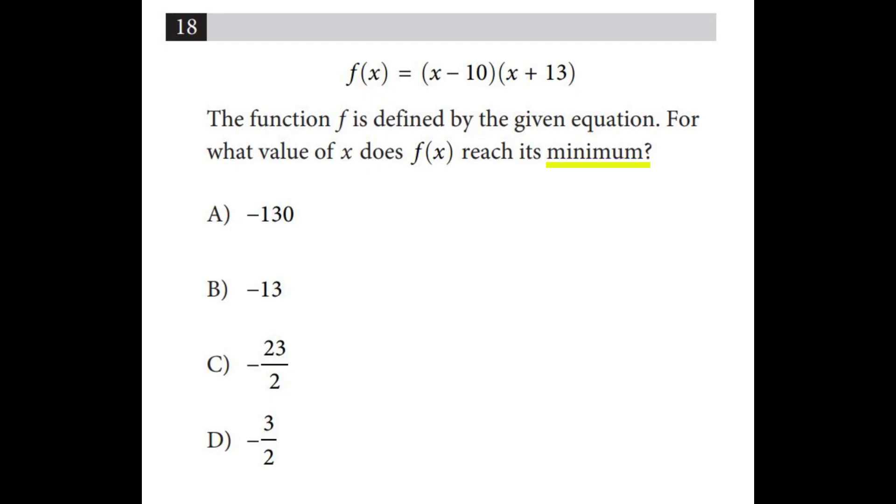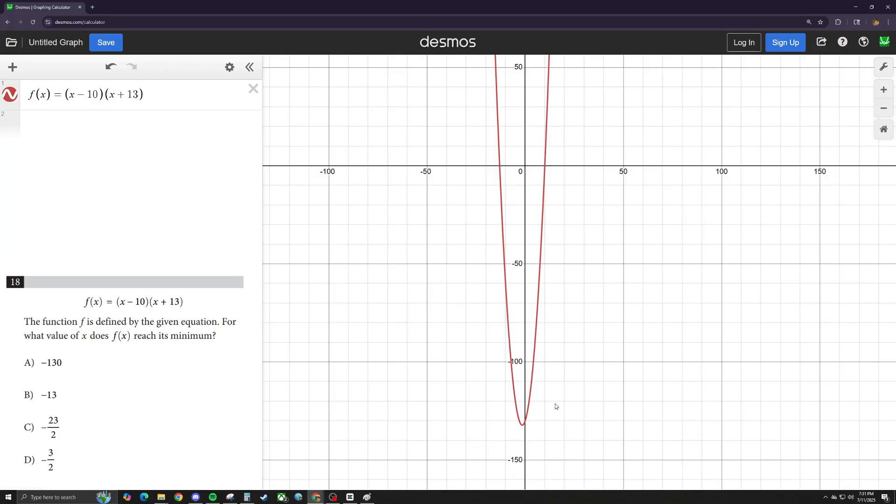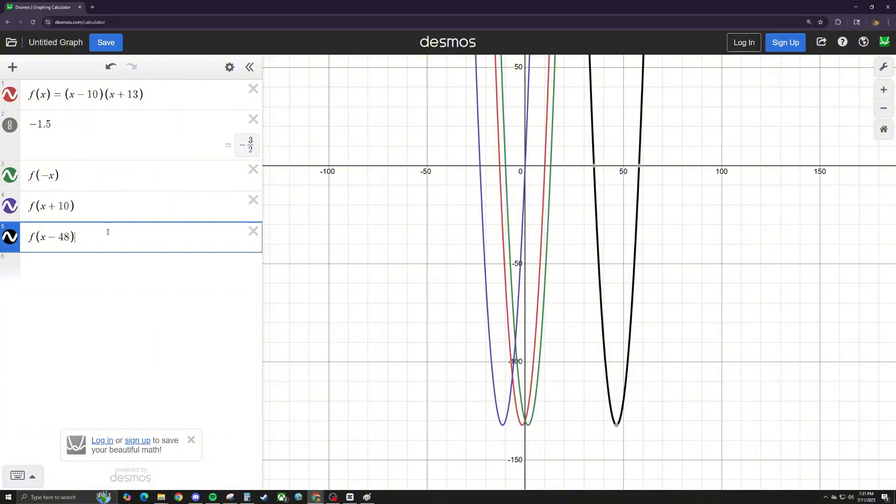Desmos is super useful when it comes to evaluating functions. For examples like these, you can just plot in that equation and click on the minimum. Likewise, you can click on any intercepts, the vertex, and any other point on the graph. A neat trick is that if you type in the decimal, you can click on the fraction sign on the left and it'll give you the fraction version. Also, this is a good time to show that Desmos can shift functions around just by typing in the changes.